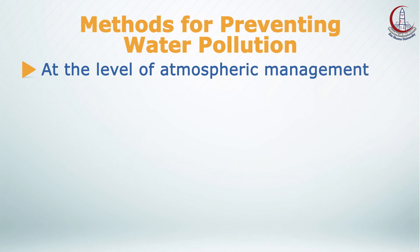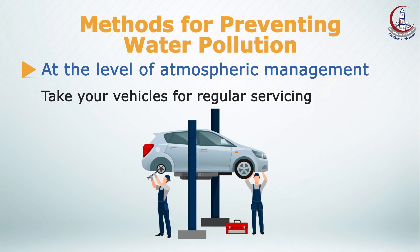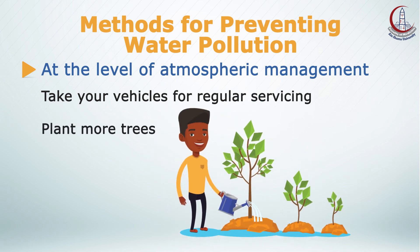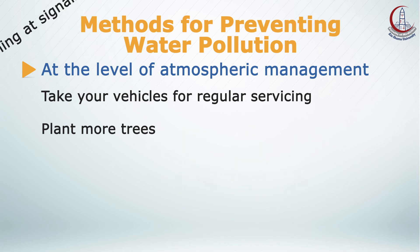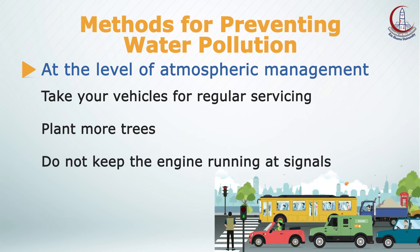At the level of atmospheric management, to prevent water pollution, take your vehicle for regular servicing — this will keep it in top running condition and prevent pollution. Plant more trees, as they prevent global warming as well as other forms of pollution. Do not keep the engine running at signals, as this releases toxic chemicals into the air which eventually lead to water pollution.